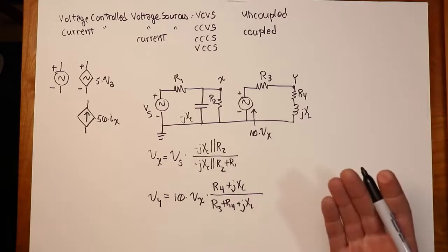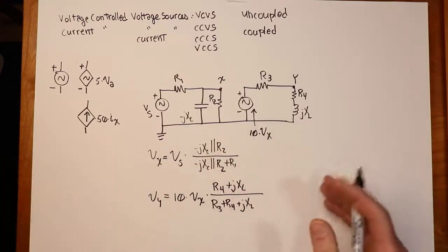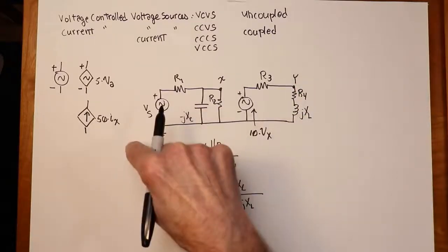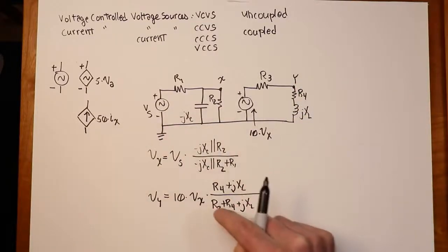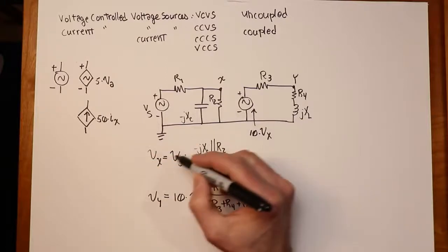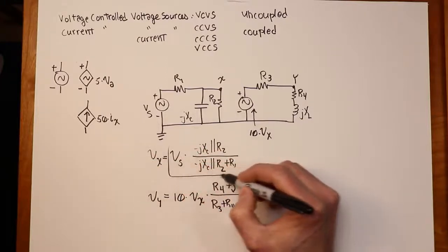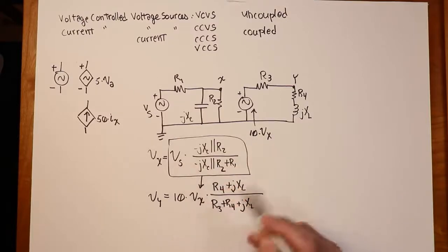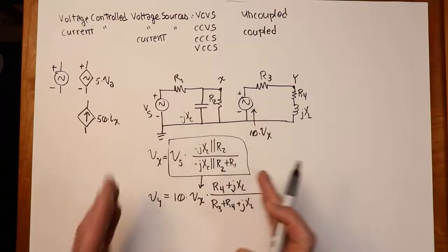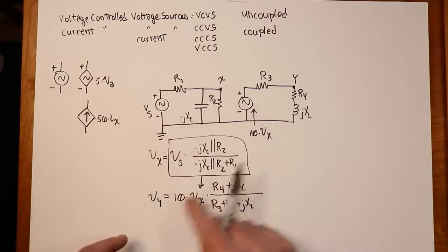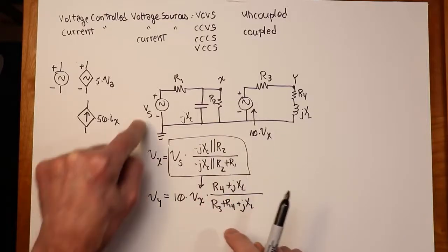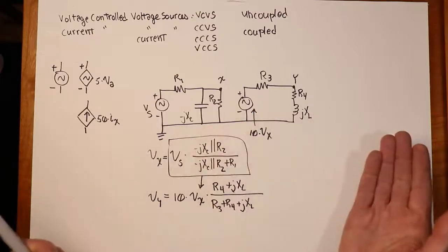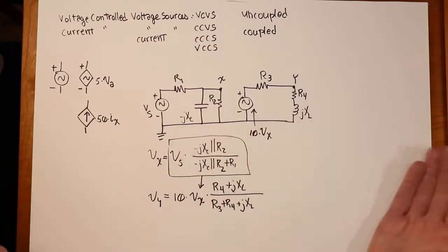Now you could also, if you had a kind of a dynamic system and you wanted to write VY in terms of VS, you could just take this VX term right here and put it right in there. So you just stick this in here, and you would have a value for VY in terms of VS.